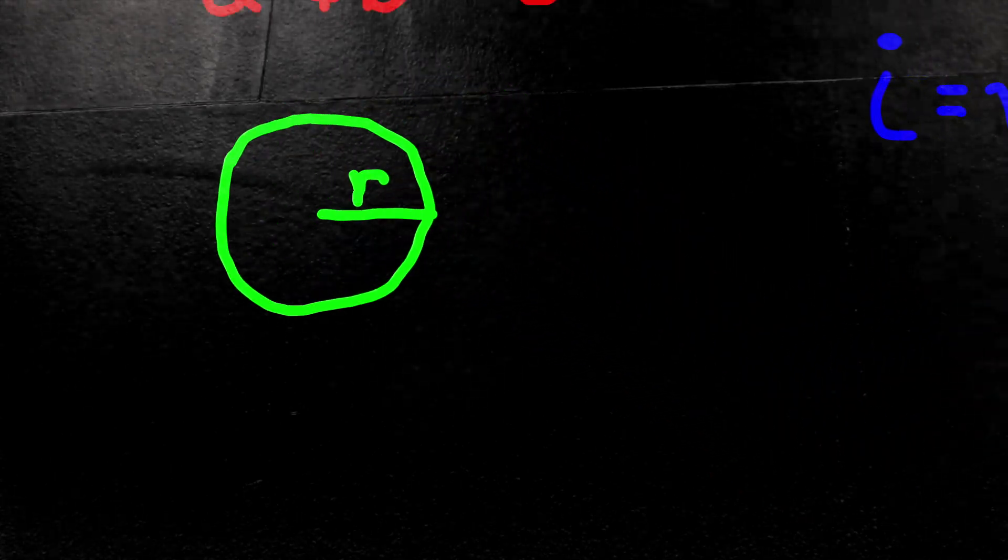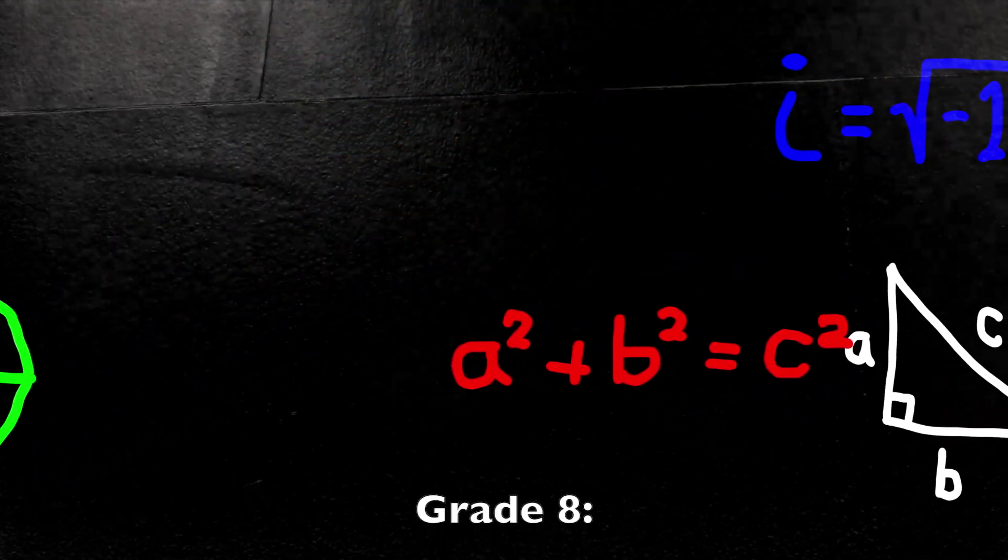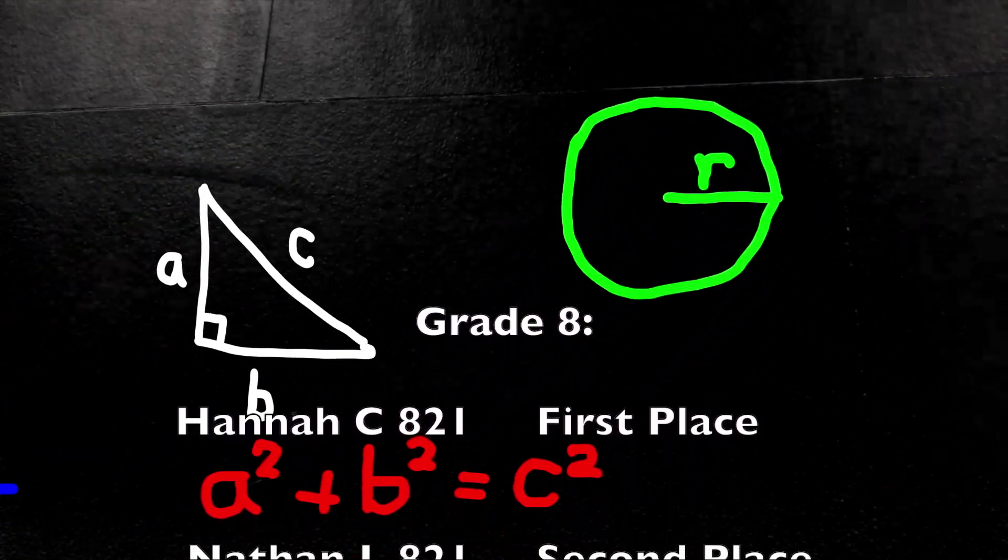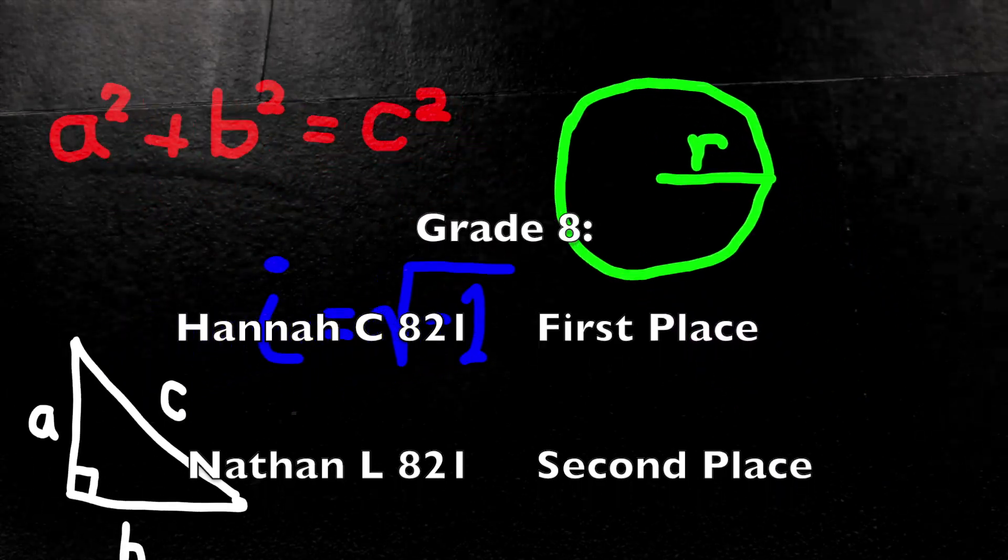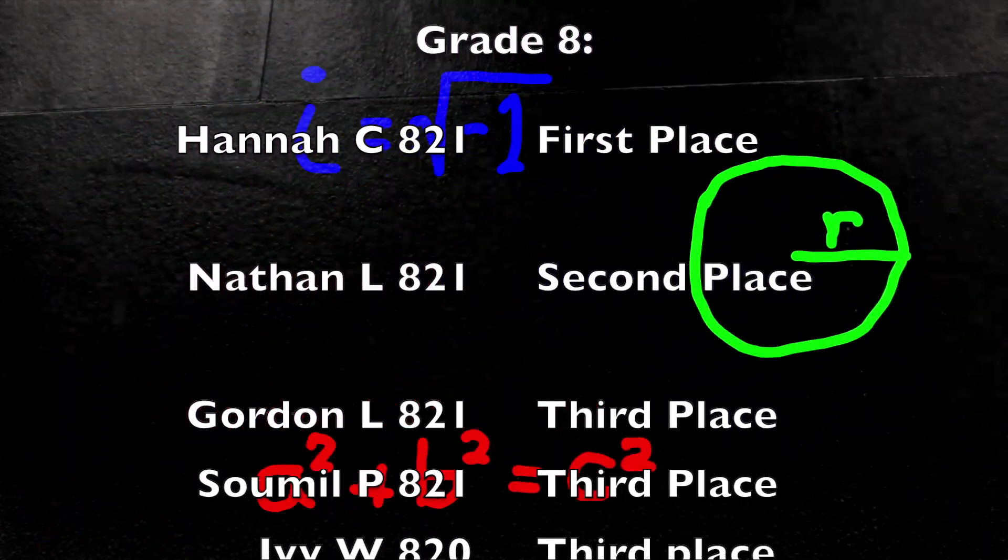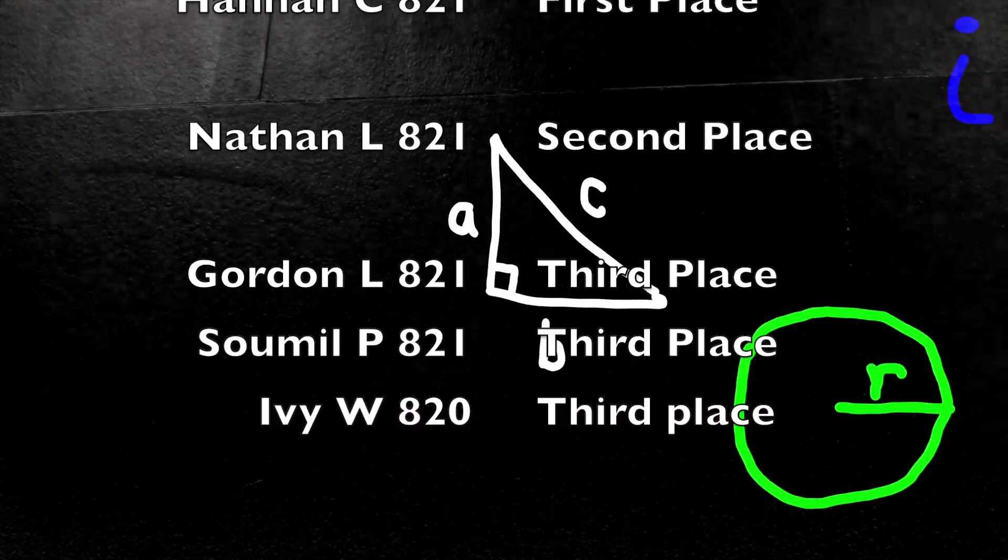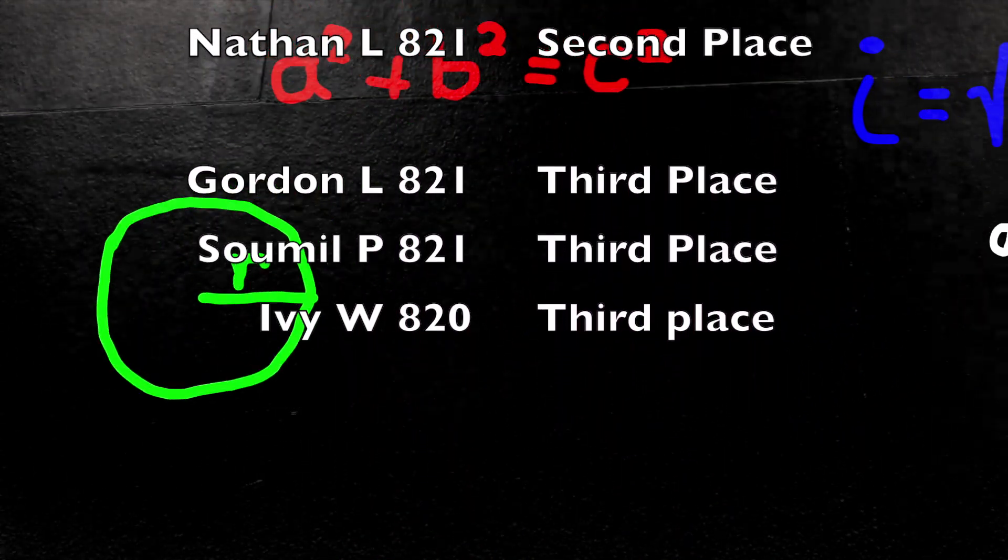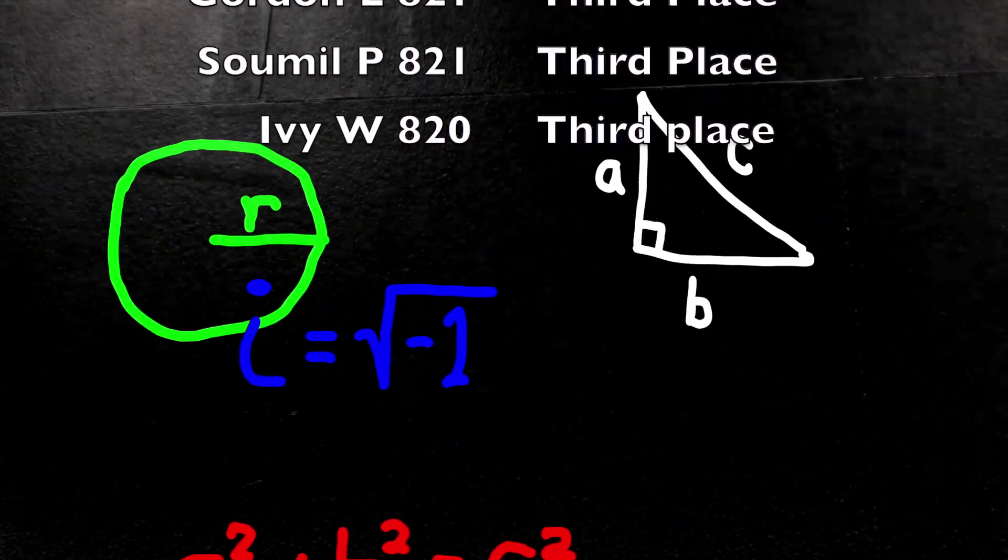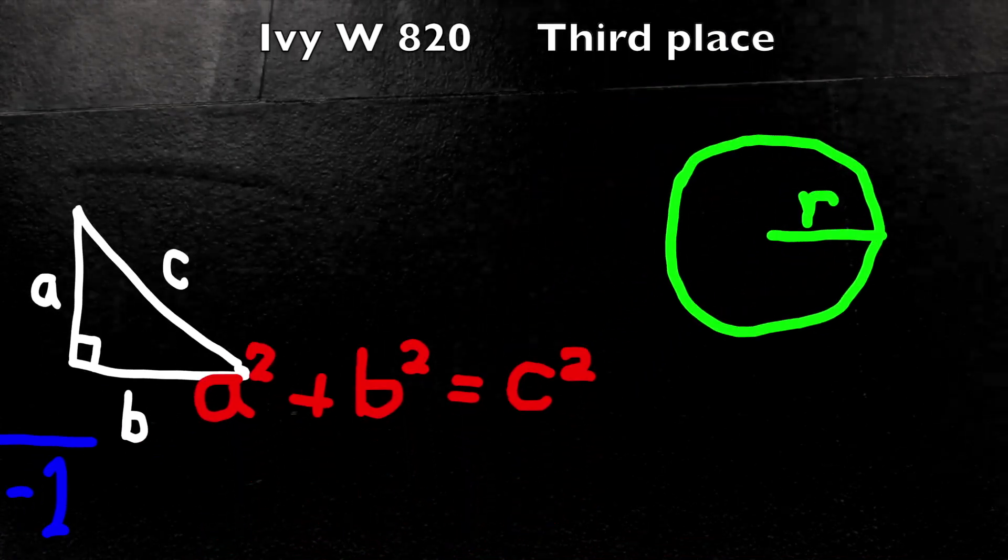For the Grade 8 SciTechs, the top score was taken by Hannah C. of 821. In second place, Nathan L. of 821. And a three-way tie for third place: Gordon L. of 821, Sommel P. of 821, and Ivy W. of 820.